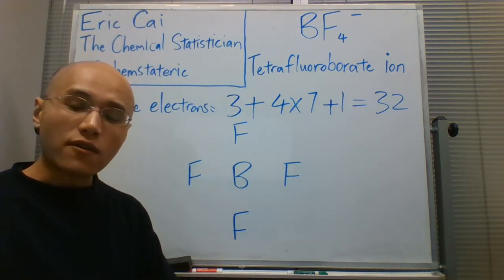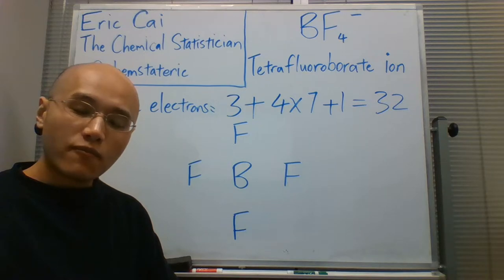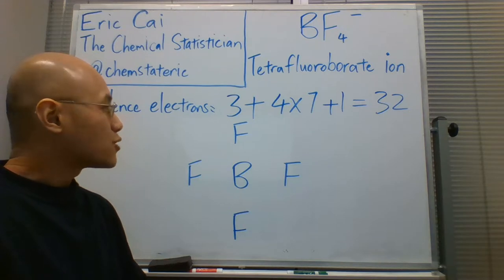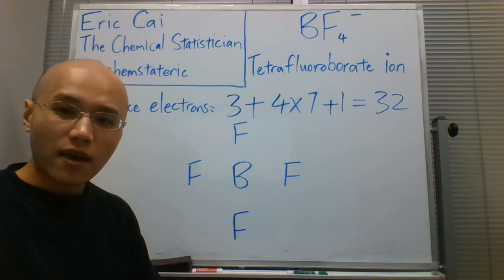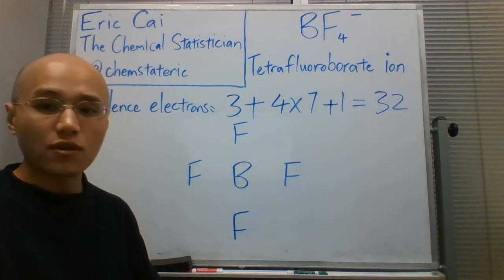Now, we can start adding the electrons to this Lewis structure. As usual, I encourage you to start by filling in the bonds, and assume that the bonds are single bonds. This isn't always true, but it's a good assumption to begin with.